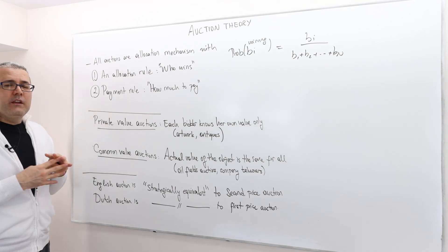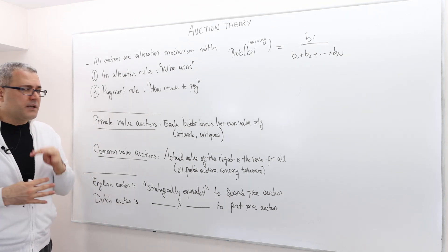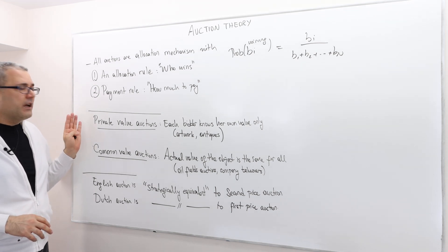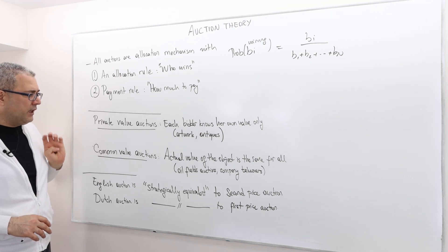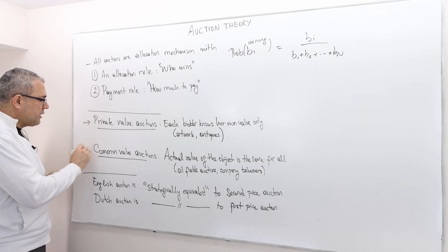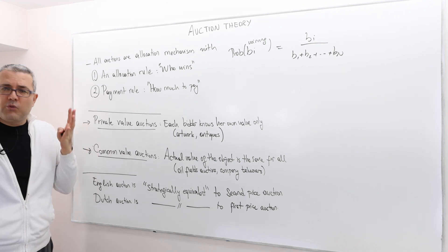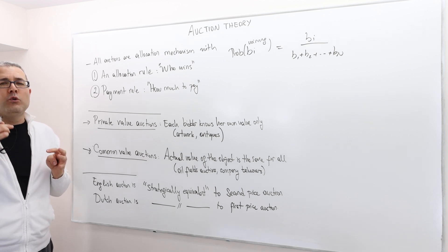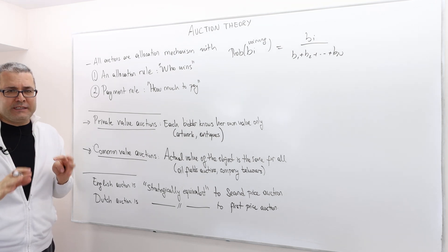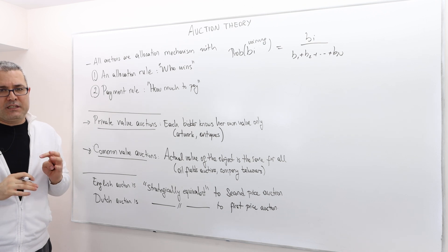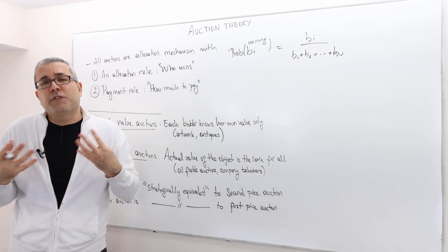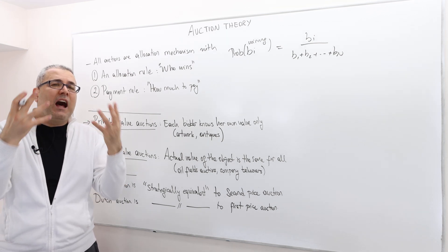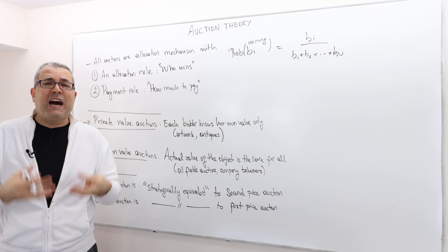So we can also categorize auctions in terms of valuations for the bidders. And we call auctions as private value auctions or common value auctions. So what is private value auction? Well, simple. Each bidder knows only his or her own valuation and uncertain about the other bidder's valuations. This is usually the case in, for example, artwork, antiques, where the value of the object is highly subjective.